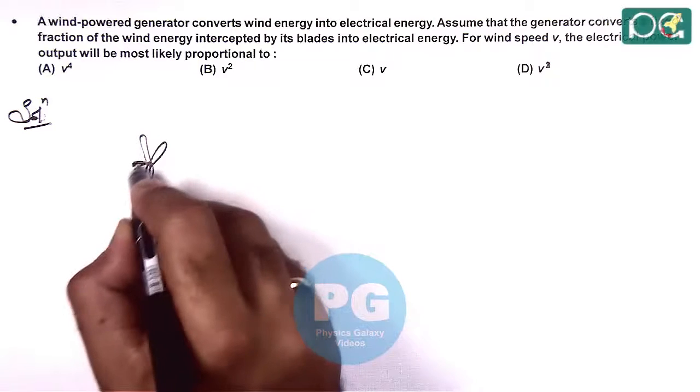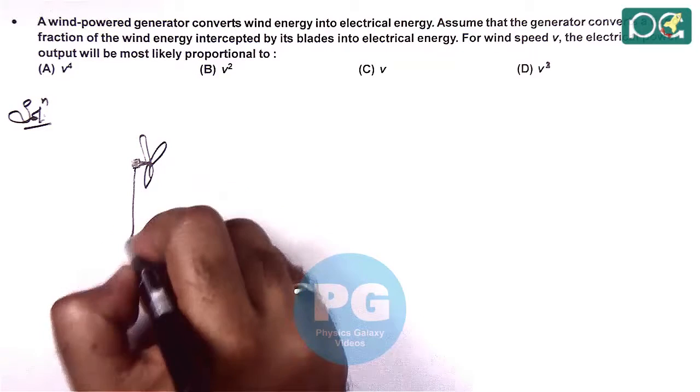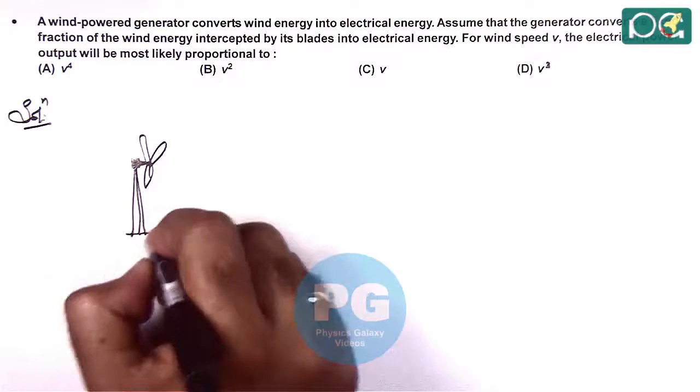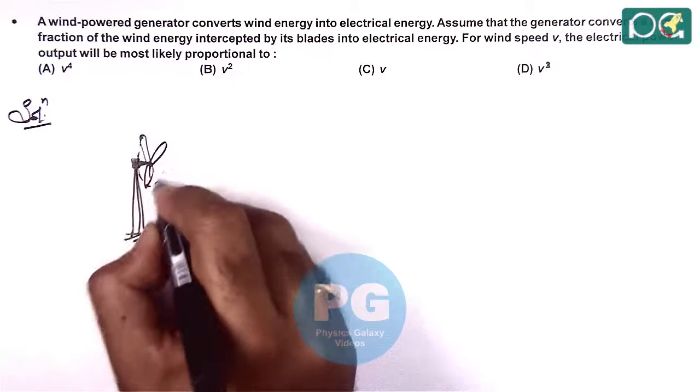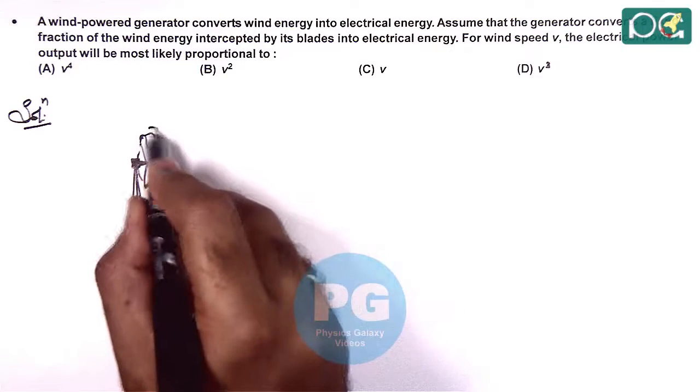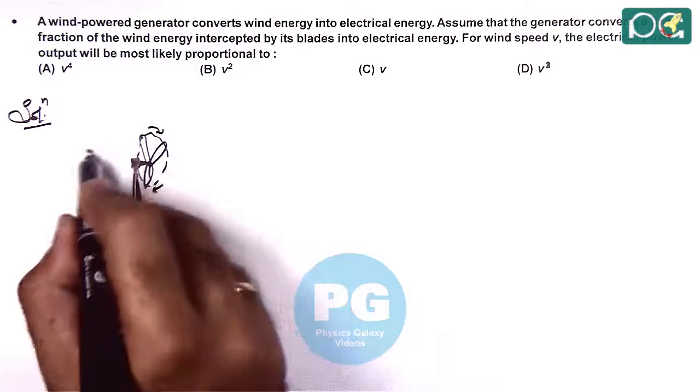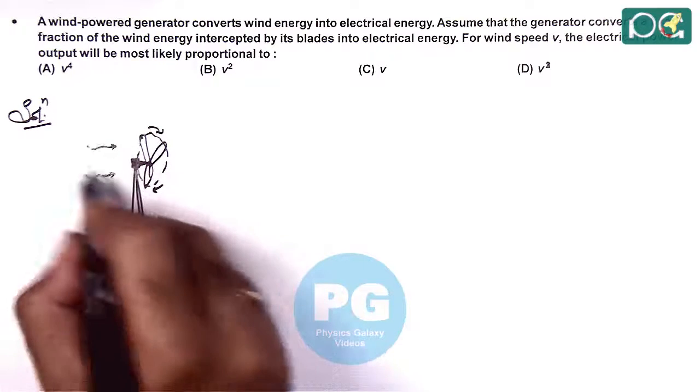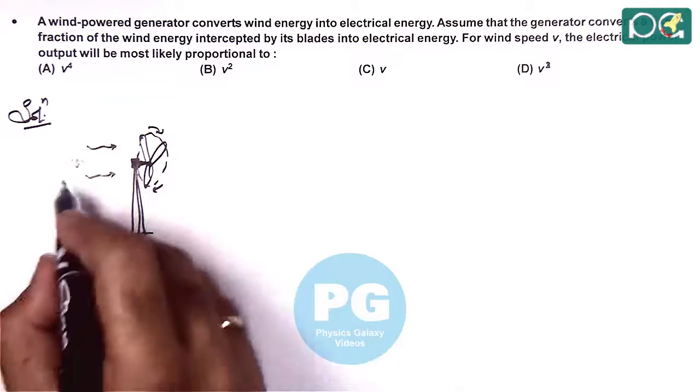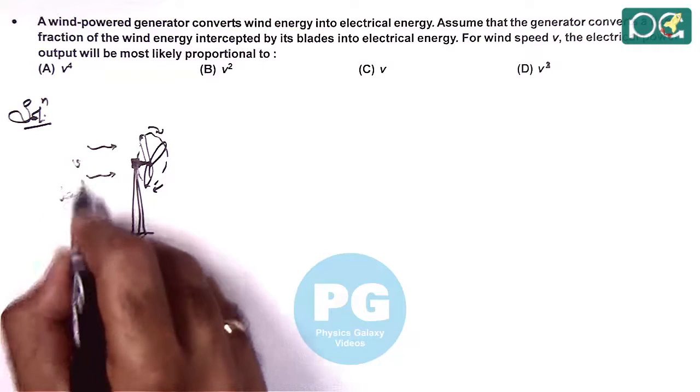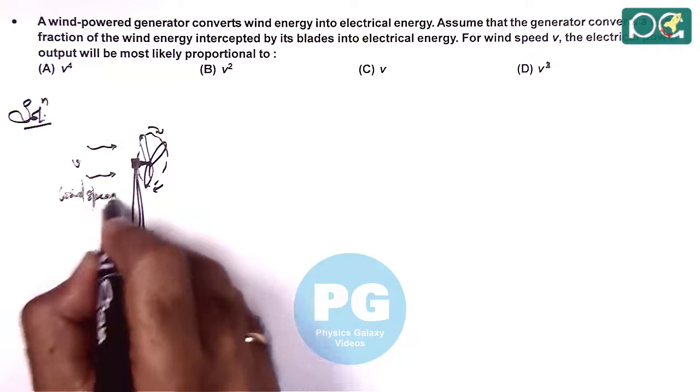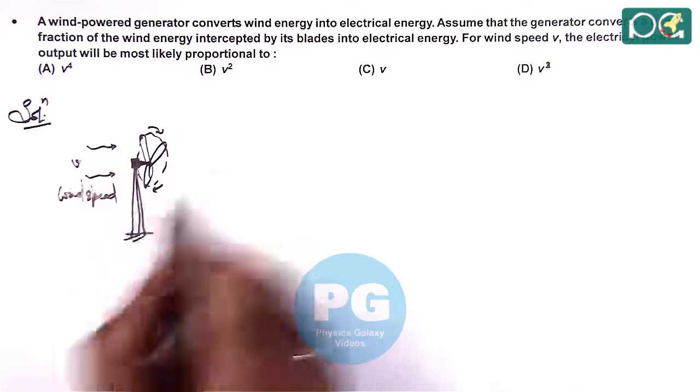Say if this is a windmill which is having the blades which are rotating due to the wind intercepted at a speed V. Here the wind speed is V which is intercepted with the blades and the blades rotate.